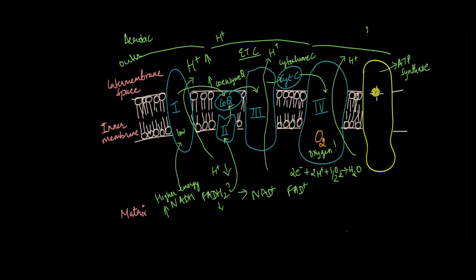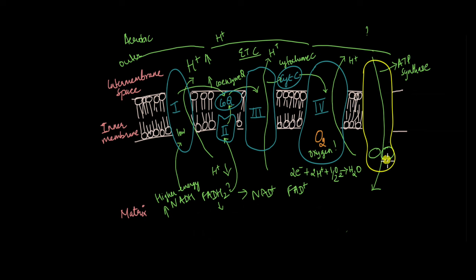That is done with the help of a protein known as ATP synthase. The protons flow down their concentration gradient through this ATP synthase molecule, and while they are flowing down, energy is released. That energy is used to turn the subunits that make up ATP synthase — it is sort of like a pump. The turning of the subunits brings ADP and inorganic phosphate closer together so they can react to produce ATP. This process where ATP synthase uses the energy from hydrogen ions flowing down their concentration gradient is known as oxidative phosphorylation.